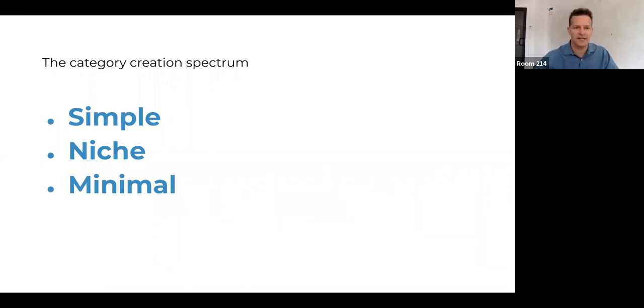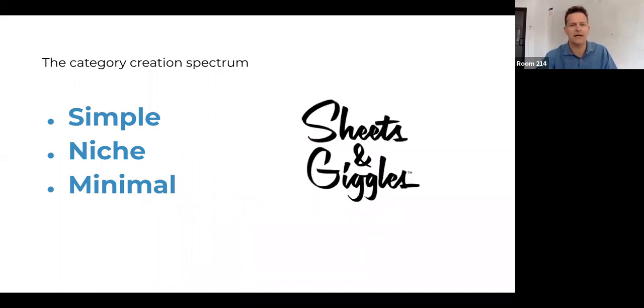So in terms of creating a category, there's kind of two ways to look at this in terms of the category creation spectrum. One is think in terms of a category and then basically creating a subcategory, something that's simple. Maybe it's one product. It's very niche, but it's a minimal approach. So for example, think of the bedding category or even bed sheets. And then you can look at a company like Sheets and Giggles. And this is a company that creates eucalyptus sheets. Who would have thunk sheets would be made out of eucalyptus? And why? What's so special about this? Well, we get into a discussion about hypoallergenic and the durability of cotton, the comfort, how much you sweat in your bed. There's all kinds of problems that this company is solving. And now they are leading the way in this emerging category.